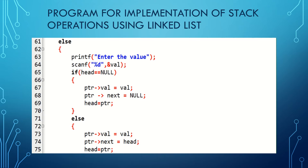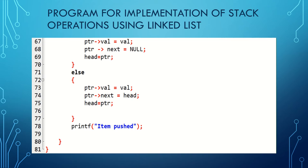If head equals null is false, it jumps to the else statement, meaning nodes are already present in the stack. In this case, pointer value is set to the entered value, pointer next is set to head, and head is set to pointer. The next node is created and inserted successfully. Likewise, any number of nodes can be inserted into the stack, and it prints 'item pushed'.